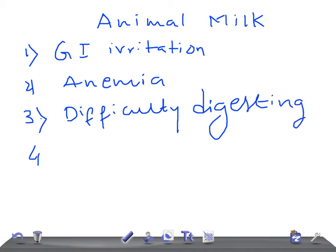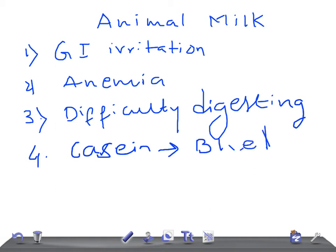The fourth important point is that animal milk contains high levels of casein, which is really very hard to digest. That results in bleeding sometimes — bleeding per GI — and it can lead to anemia as well.